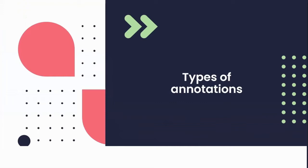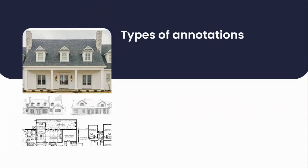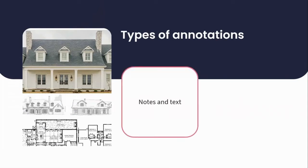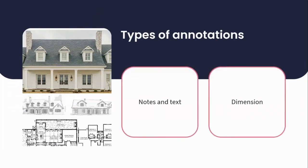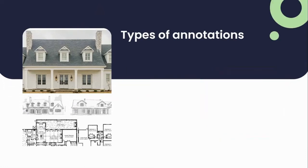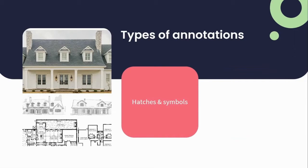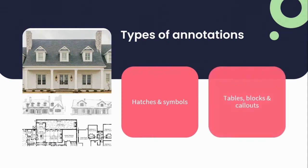Let's break some of the common forms of annotations up. Types of annotation: we first have our notes and text. We then have our dimensions, which is adding measurement to a space or object. We then get hatch patterns and symbols — hatch pattern adds texture or visual to the element, and symbol adds notations as well. And then we get notations in the form of tables, blocks, and call-outs.